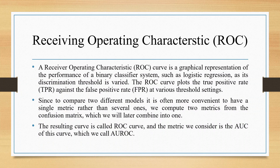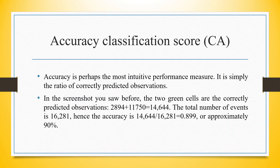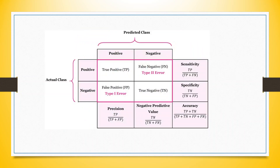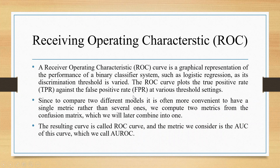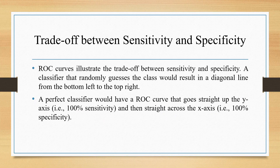Let us go back. We are talking about sensitivity and specificity. Sensitivity is true positive divided by true positive plus false negative. Specificity is true negative divided by true negative plus false positive. Our ROC curve will be generated on this basis and will illustrate the trade-off between sensitivity and specificity.